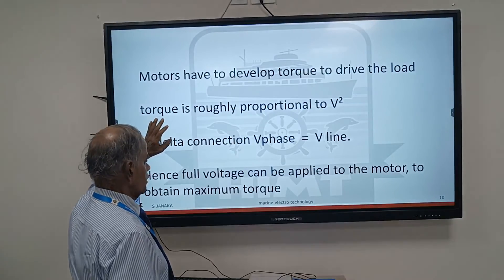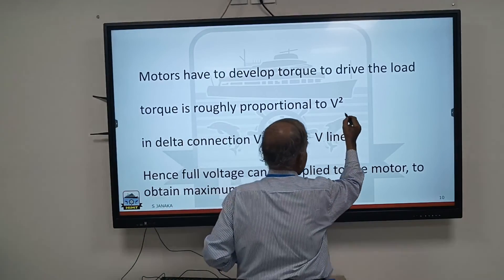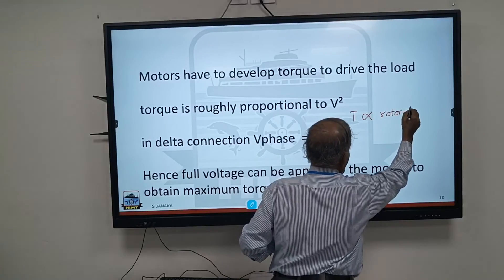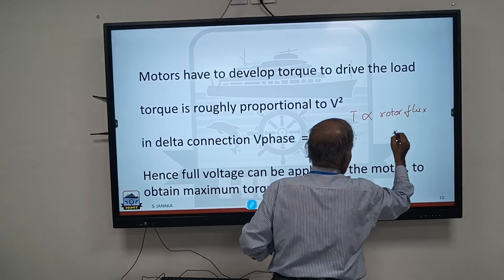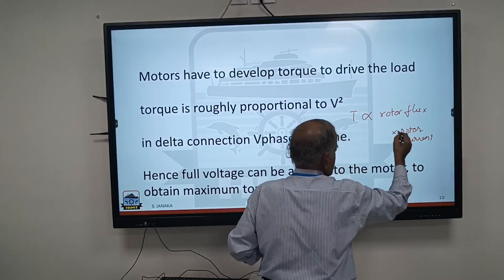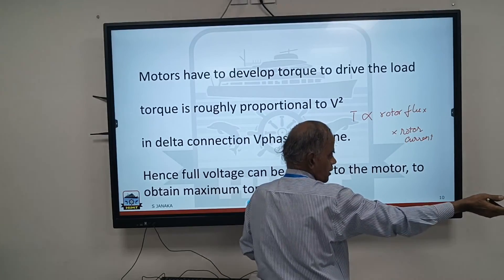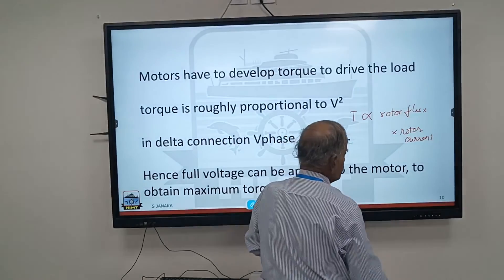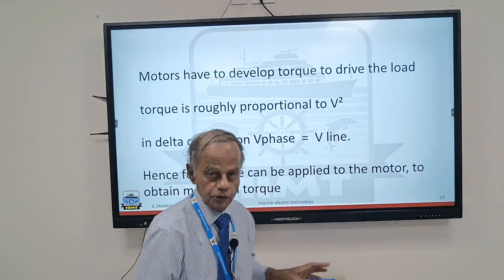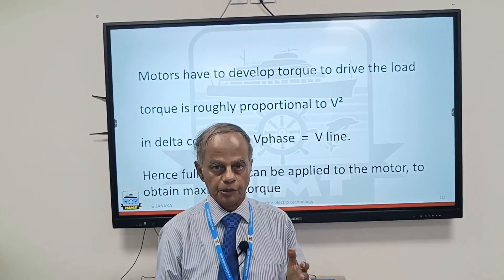When we say torque, literally speaking, torque is proportional to rotor flux times rotor current. This flux is proportional to the applied voltage through the induced EMF in the rotor. The rotor current depends upon the induced EMF in the rotor plus the applied load. So torque is roughly proportional to voltage squared. With this I conclude this lecture. In the next lecture, we will see the three types of power in the AC circuit and how the power factor comes into the picture. Thank you.